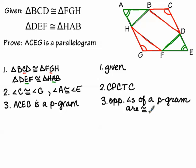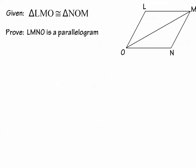That concludes the second proof — it's much shorter even though the information may have made it look more complex. Now we have this last one. We're given another pair of congruent triangles in an entirely different-looking diagram, and we're asked to prove that LMNO is a parallelogram.